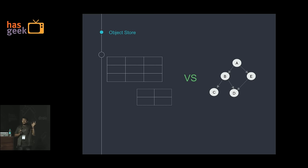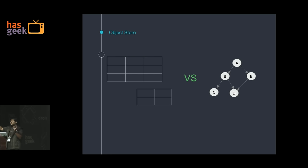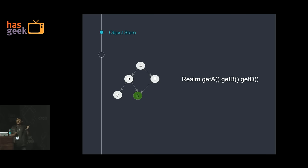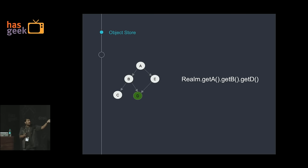In Realm there is no concept of tables — everything is an object. So if you have a person table in your database schema, in Realm it will be a person object. Similarly, in typical SQL you do a join, but in Realm you can treat each object as a node and it can be as easy as graph traversal. You can just say realm.getA.getB.getC — simple, no joins.